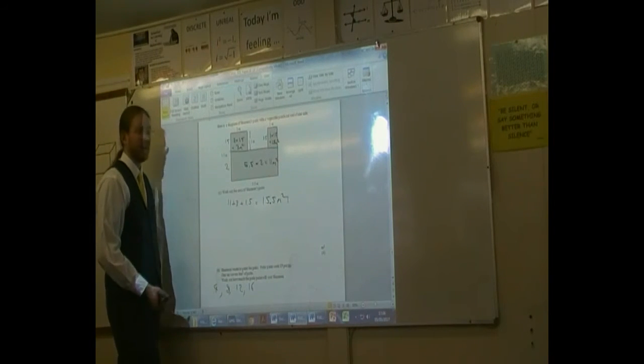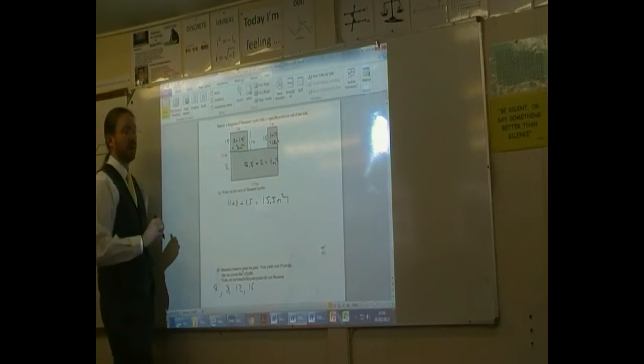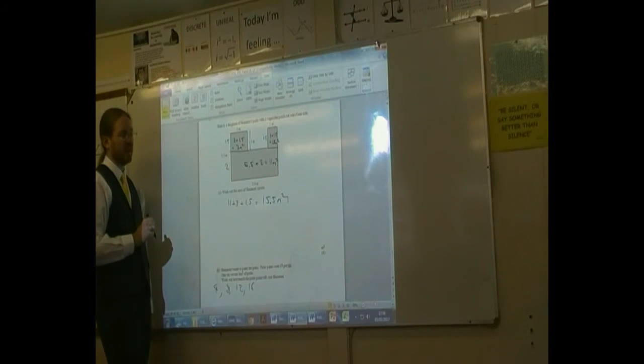We need to buy 4 tins, because they're to cover the whole 15.5. Even though we should have a bit left over, we can't get less than a tin, so we have to buy whole numbers of tins.